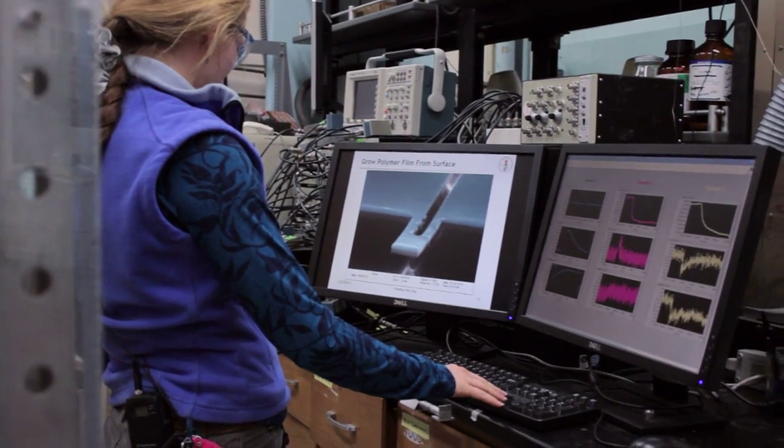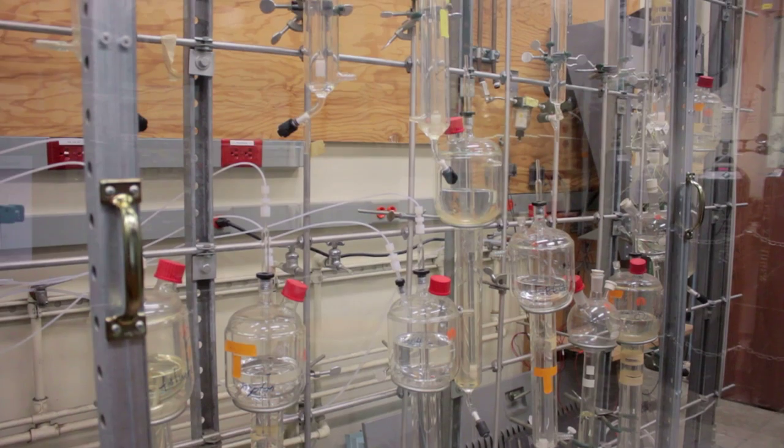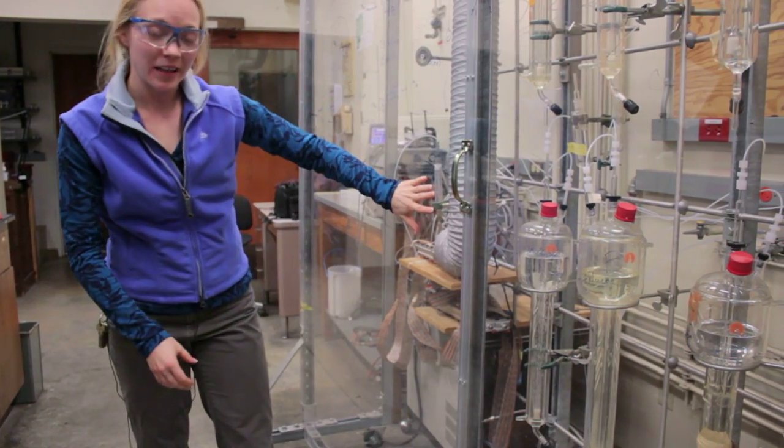To test our sensors, we generate vapors using a bubbler system which simply bubbles air through a liquid of our choice. In this case, it's butyl alcohol.